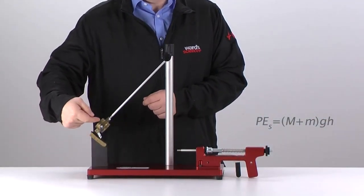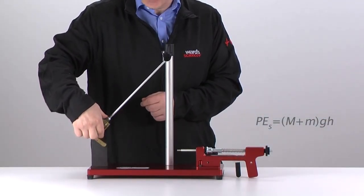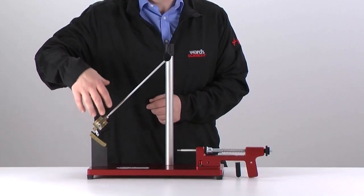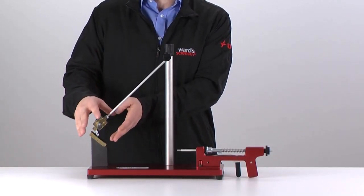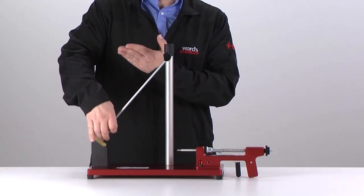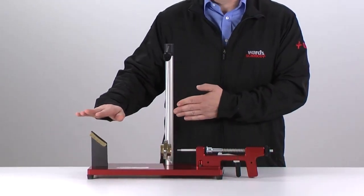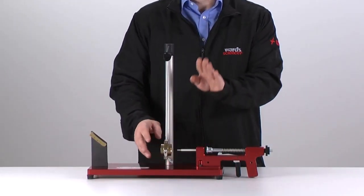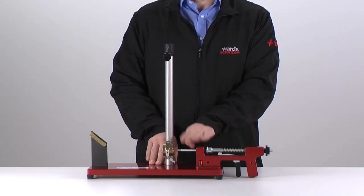The height in which the catch raises up to minus the height that it initially started at is the potential energy that that ball and pendulum catch gained. Students can work backwards to take the potential energy at the top to the kinetic energy of the ball at the bottom and determine the velocity in which the ball was fired.